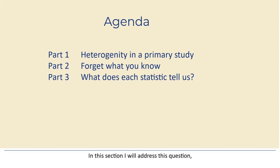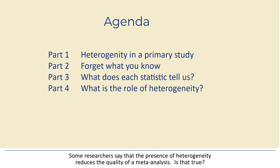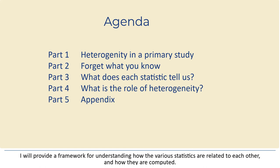In this section, I'll address this question, and I'll also show how I would report heterogeneity in a meta-analysis. Part four: what is the role of heterogeneity in a meta-analysis? Now that we know how to quantify heterogeneity, what do we do with it? Some researchers say that the presence of heterogeneity reduces the quality of a meta-analysis. Is that true? Part five is a statistical appendix. I'll provide a framework for understanding how the various statistics are related to each other and how they are computed.